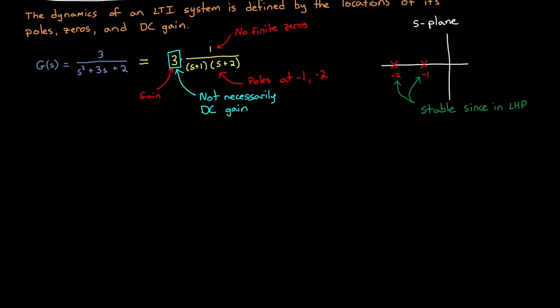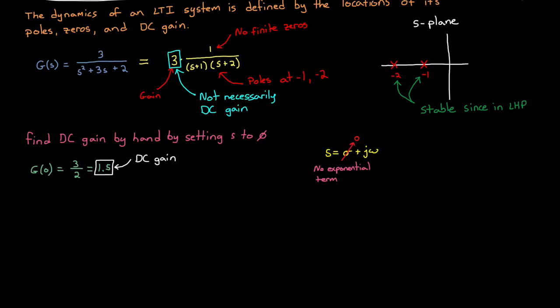And if we go back to the blackboard, we can find the DC gain of the continuous system by hand simply by setting s to 0, and then simplifying the ratio. And here we get 1.5 like we expected. Setting s to 0 allows us to find that really low frequency gain because s equals sigma plus j omega, and so setting it to 0 is the same as zeroing out the exponential term, and then making the frequency omega also 0, so it's just a flat line.